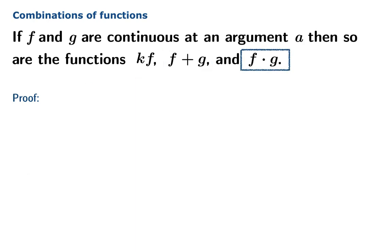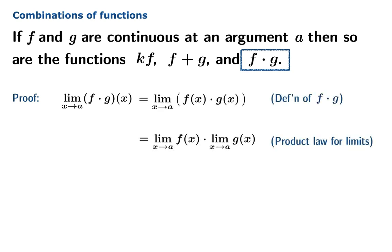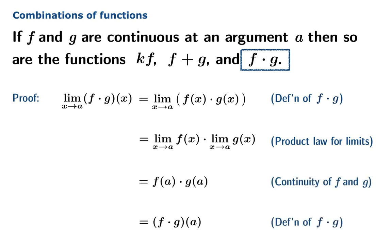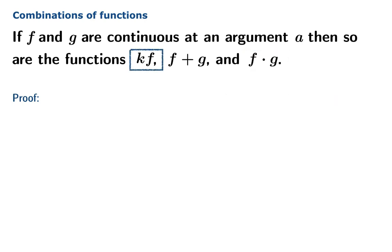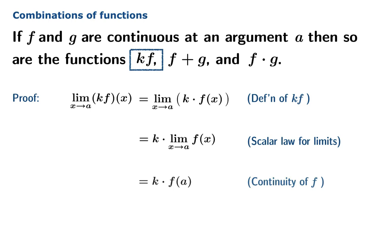For the product function f times g, it's essentially the same proof. You use the definition of f times g to look at the limit, apply the appropriate product law for limits, notice that f and g are both continuous, and recognize the definition of f times g — and you've just proved that f times g is continuous at a. And finally, for the function kf, a very similar proof applies: work out the definitions, apply the appropriate limit laws, and you'll find that this function is continuous at a as well.